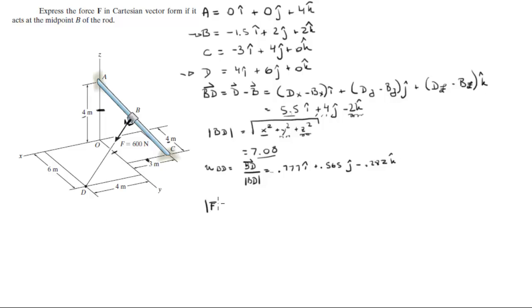You're given the force magnitude is equal to 600. So if you wanted to find the Cartesian vector form of the force, all you got to do is multiply the magnitude times the unit vector BD that is going in the same direction, which is equal to multiplying each of these values by the 600.